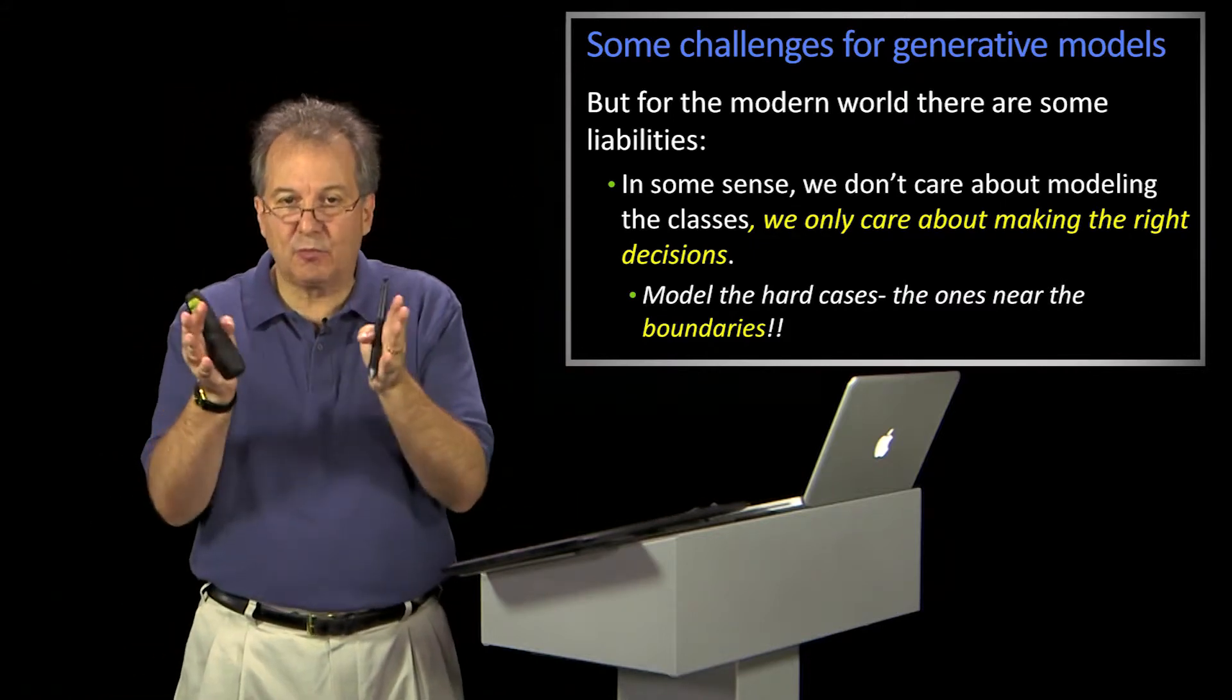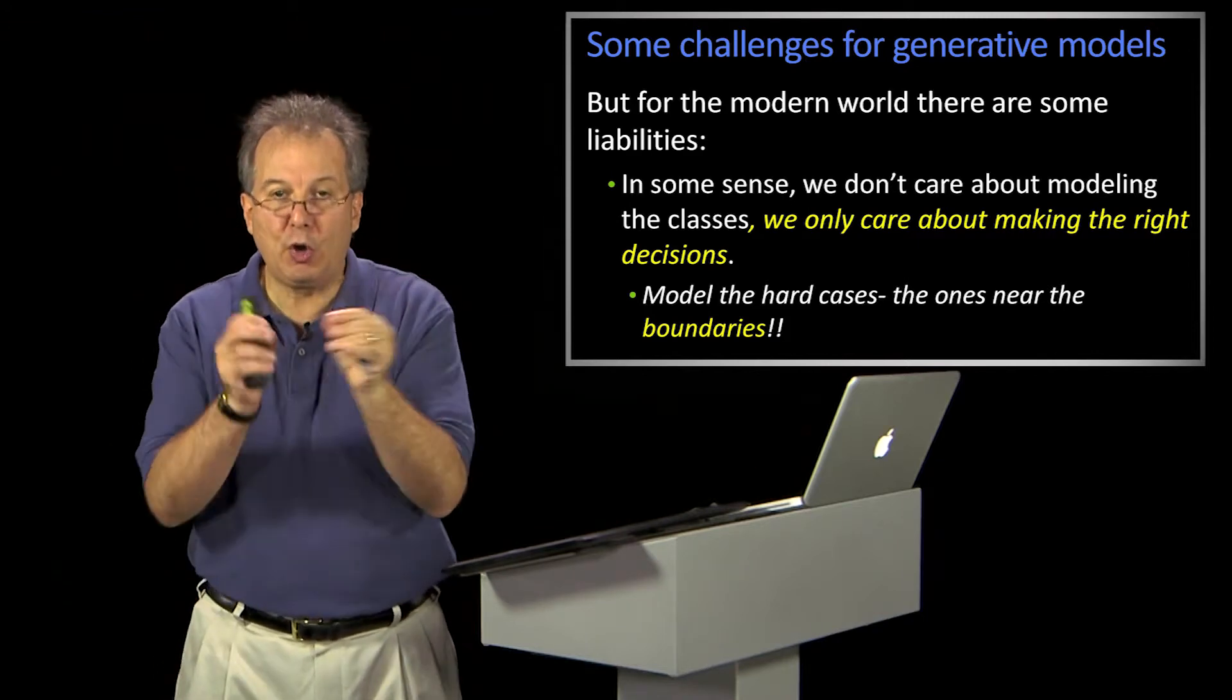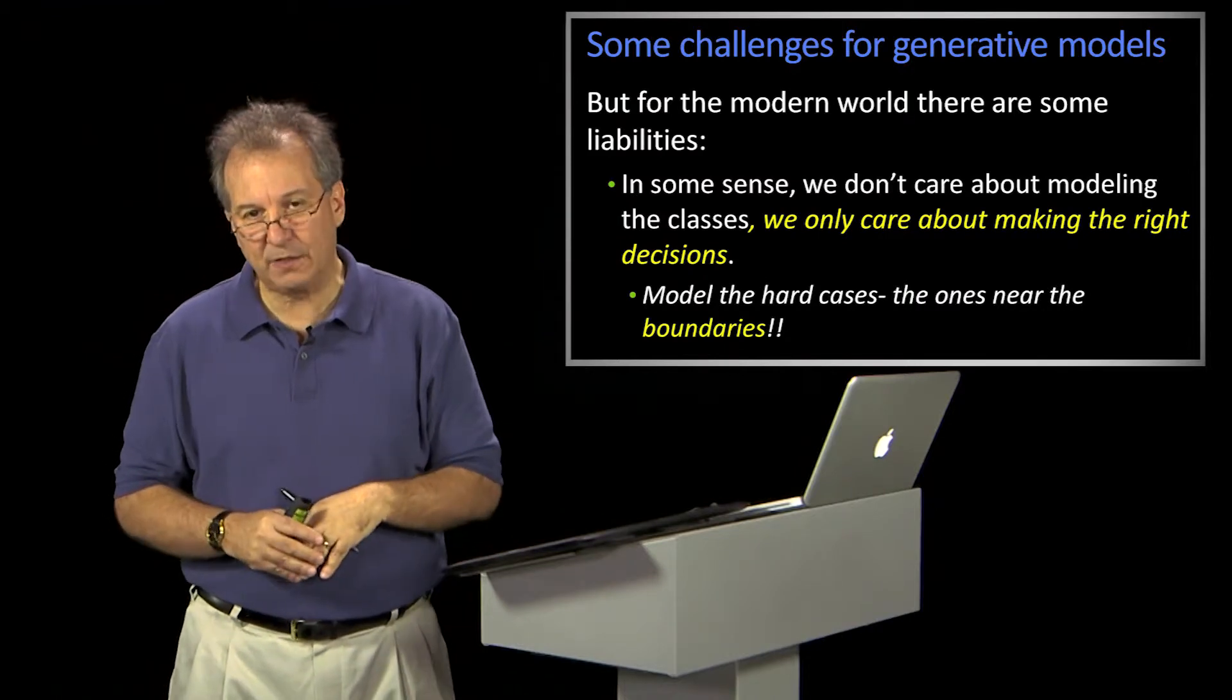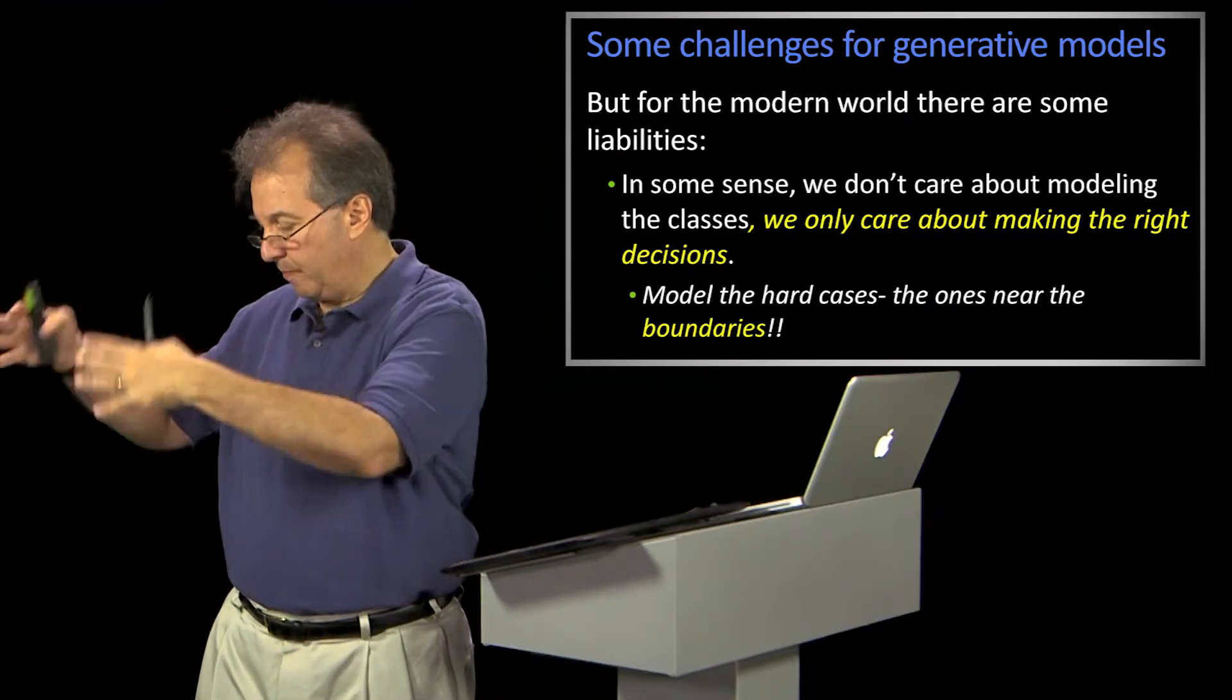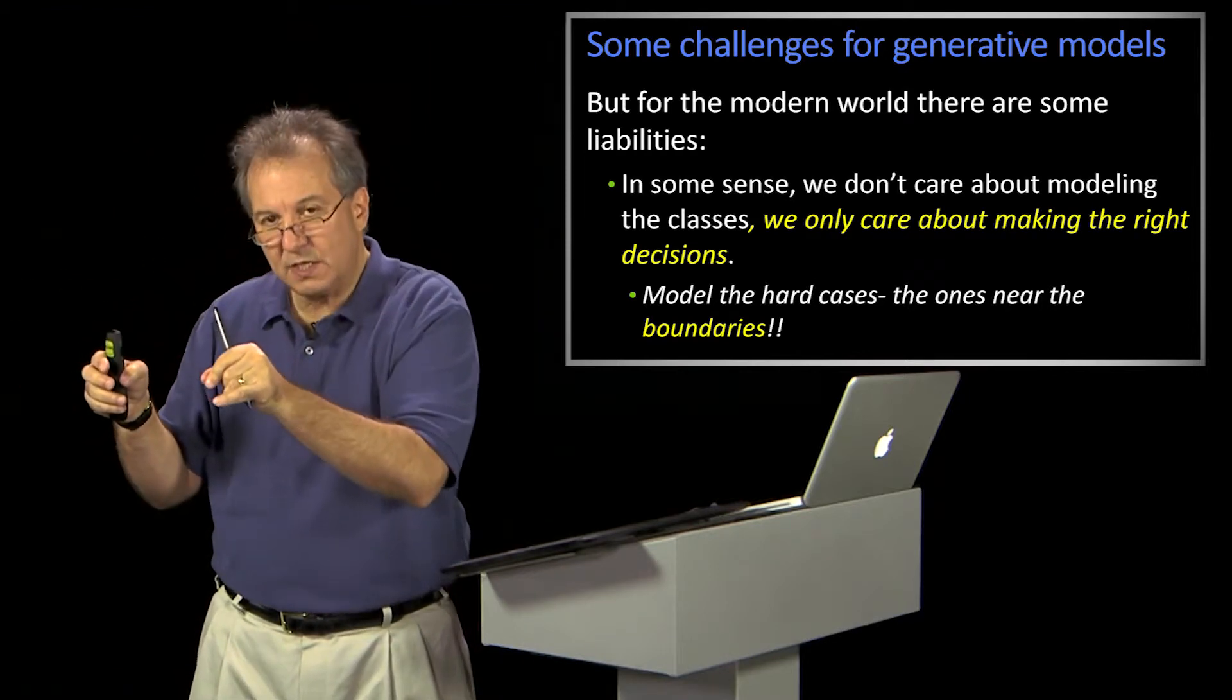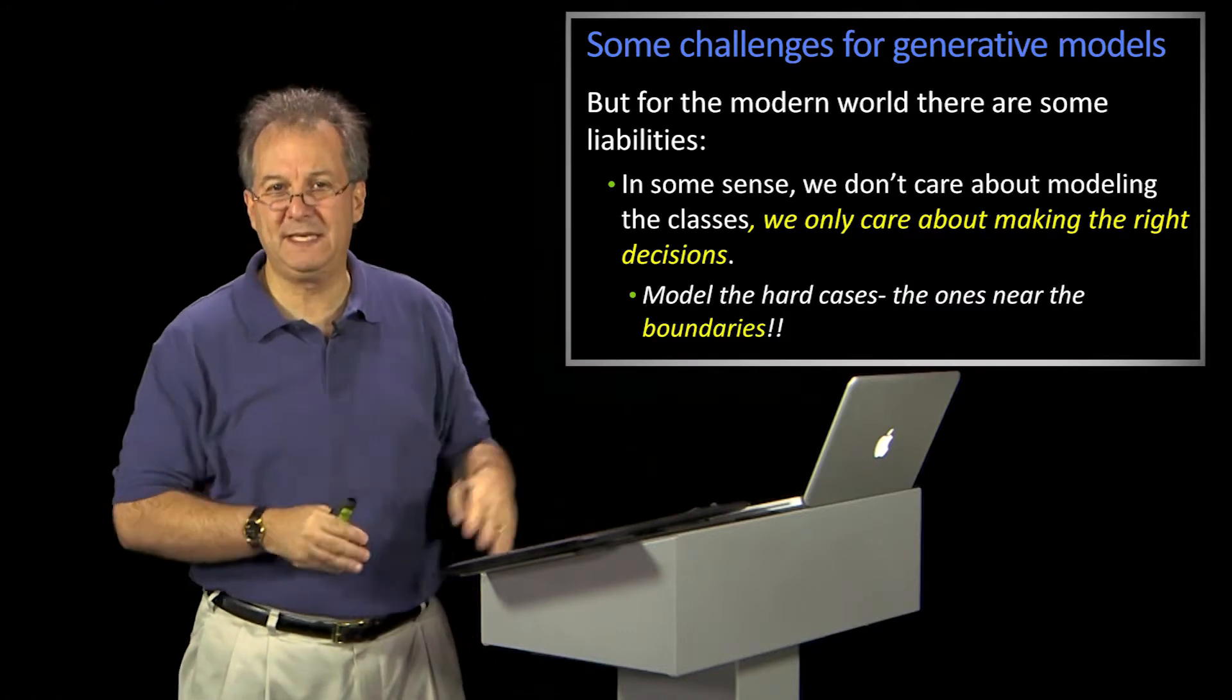We only care about making the right decisions. So we should be modeling the boundaries, the hard cases, the cases where I'm not really sure. And when you do a general model of a category, of a class, you're worried about the vast majority of them. So the skin pixels, not just this boundary that's next to the non-skin ones.